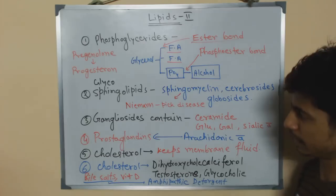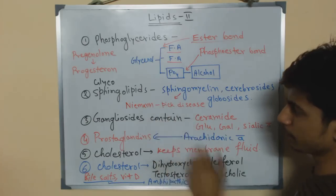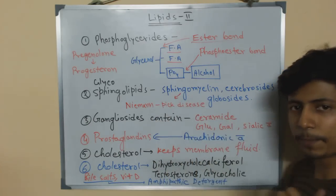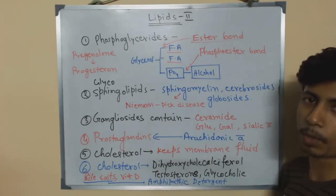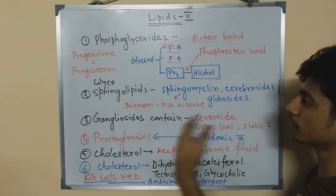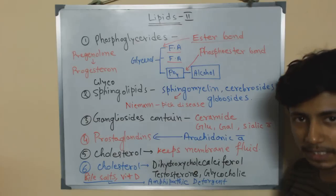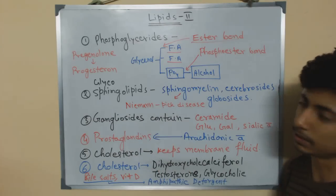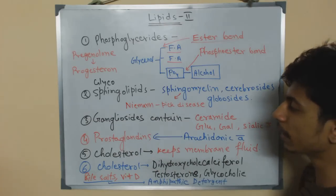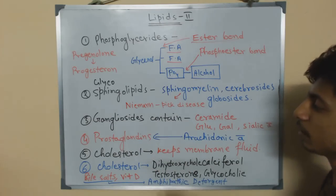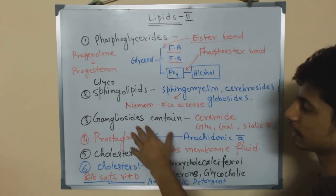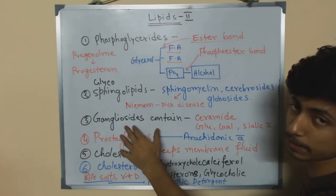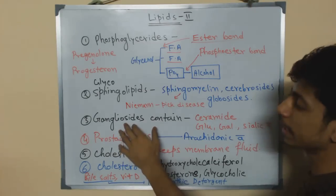A very important exam question: in Niemann-Pick disease, sphingomyelin — a type of sphingolipid — accumulates and its concentration increases in the body. Also note that gangliosides are not a part of sphingolipids; they are different.